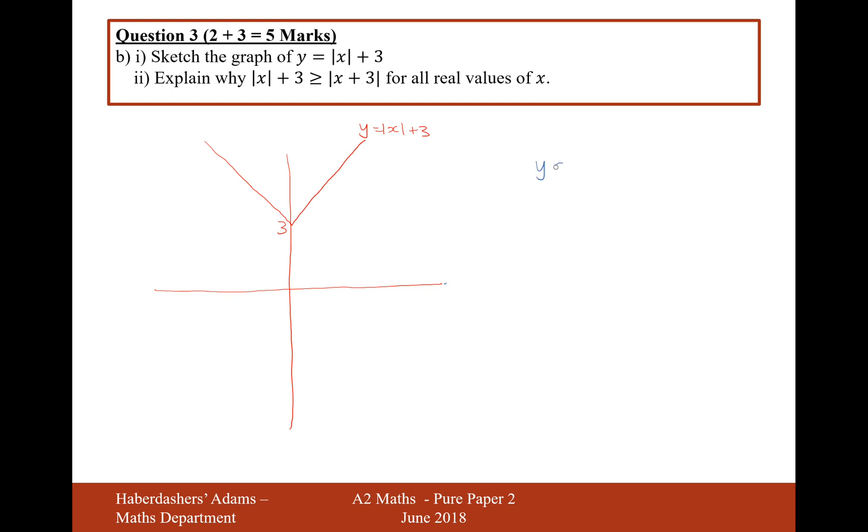this is going to be the modulus of X graph moved left by 3. In that case it's going to look exactly like that. So, it's going to move to minus 3.